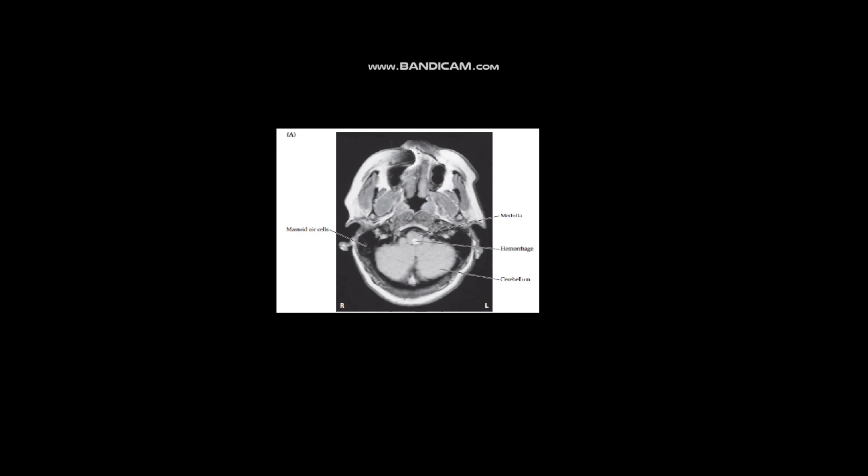Having narrowed the area of interest to the brain stem, a brain MRI was performed. The MRI revealed a small bright region on the unenhanced T1-weighted images consistent with subacute hemorrhage, located in the dorsal portion of the rostropontine region, in the region of the obex.